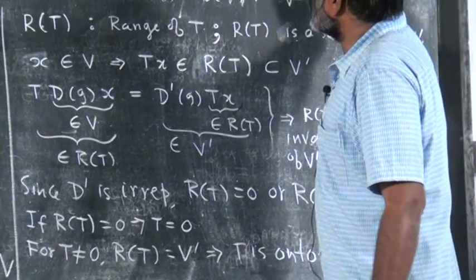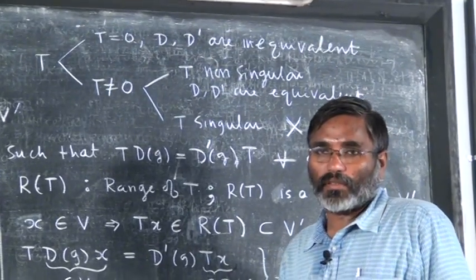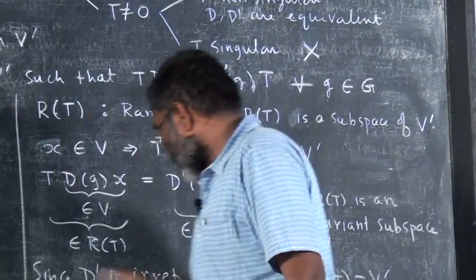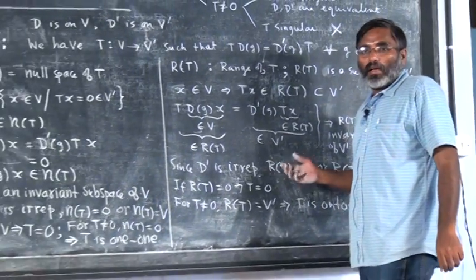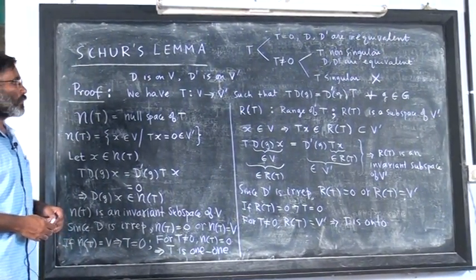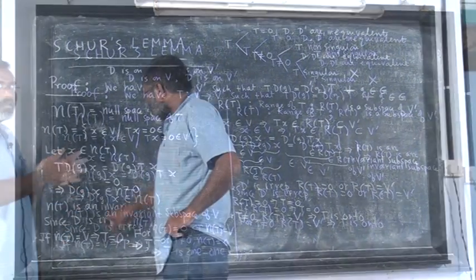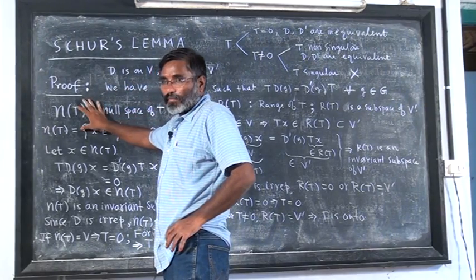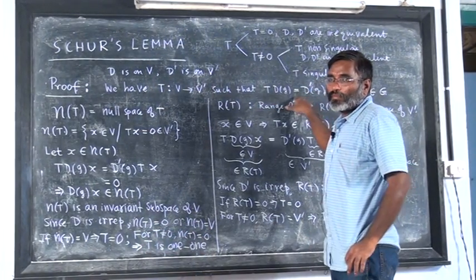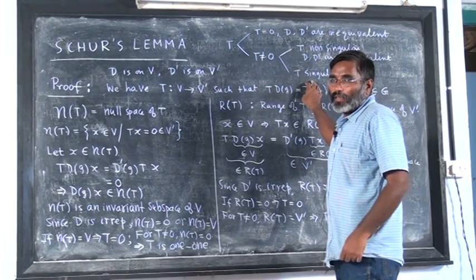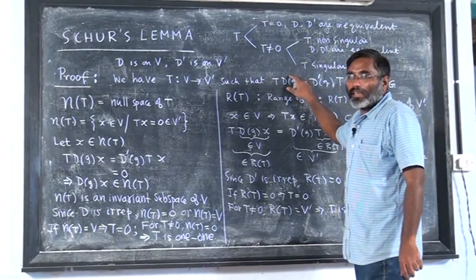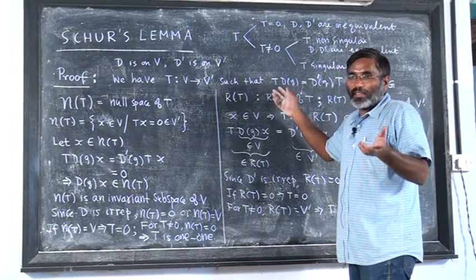So non-zero and non-singular, or zero — these are the only two options. We can prove that if T is non-zero, T is 1-1, T is onto, so T is invertible or non-singular. If T equals 0, that is the other case. We can write D(g) equals T inverse D prime(g) T, which is like a similarity transformation. If no such non-zero T exists, you cannot connect them — the representations are inequivalent.